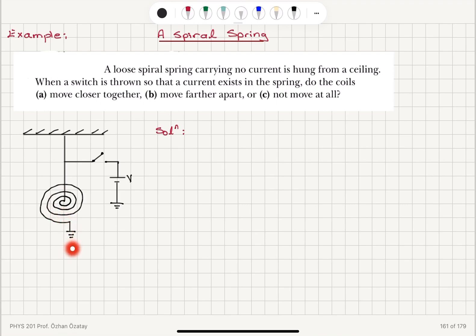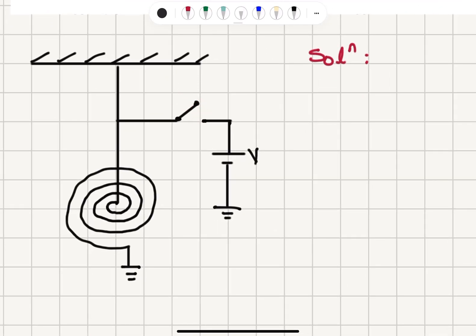now we have a current flowing to the ground. Do the coils move closer together, move farther apart, or not move at all? So when we close this switch,